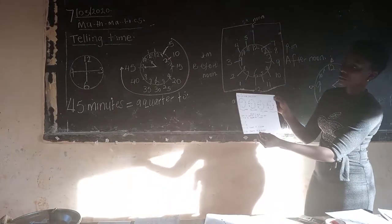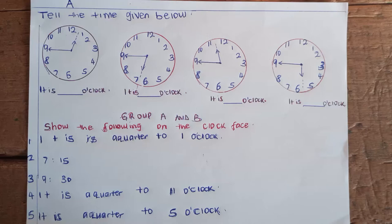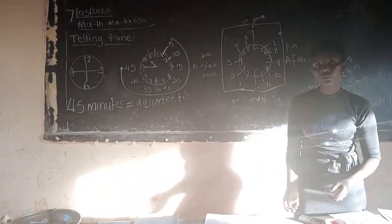Here is our exercise. Group A: we have the long hand in nine and the short one going to one. Look at the worksheet and do the exercise. Groups A and B show the following on the clock face: it is a quarter to one o'clock; then seven fifteen; nine thirteen; number four is a quarter to eleven o'clock; and lastly a quarter to five o'clock. Thank you for being with us, listeners.